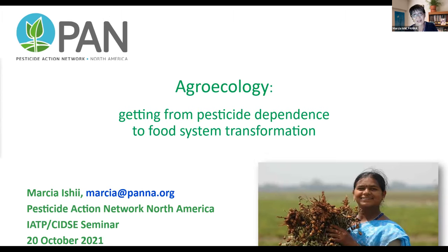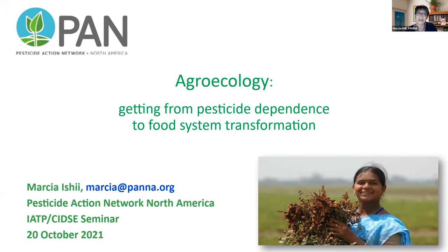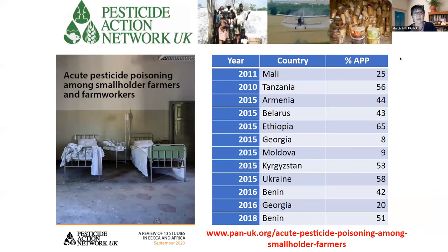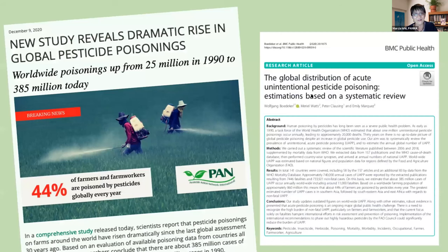PAN has been fighting the harms of pesticide-dependent agriculture for over 40 years. Unfortunately, the reality today is that pesticide poisonings continue to affect millions of people every year. A systematic review conducted by PAN and colleagues found that pesticides are responsible for an estimated 385 million cases of acute unintentional poisonings every year. Many of these have also been linked to an increase in chronic diseases such as cancers, developmental disorders, hormone system disruption, or reproductive problems.